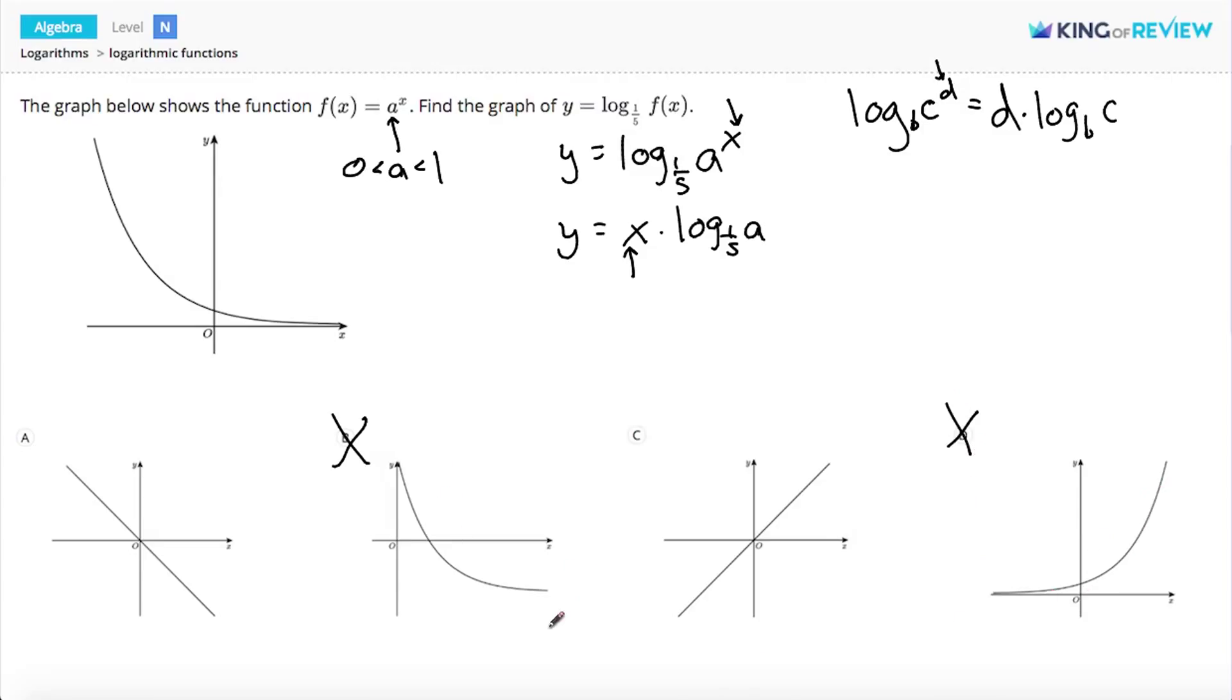Now, to decide between a and c, we need to decide if the slope of our line is positive or negative. The slope is log base 1 fifth of a. But logs with bases that are less than 1 are hard to figure out. Fortunately,